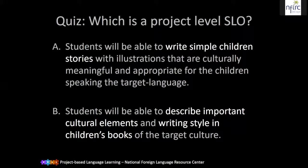One more example. A: students will be able to write simple children's stories. B: students will be able to describe important cultural elements and writing style in a children's book. You have to know what a children's book looks like before you can write one yourself. So B is a task level and A is a project level SLO. At this point, I hope everyone can differentiate different levels of SLOs and tease apart component skills to develop task level SLOs that support learning toward project and course level SLOs.